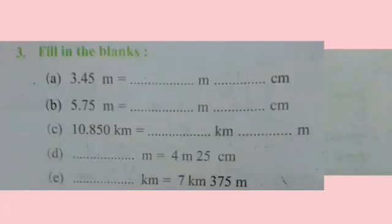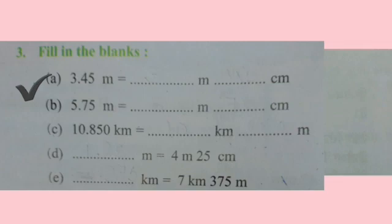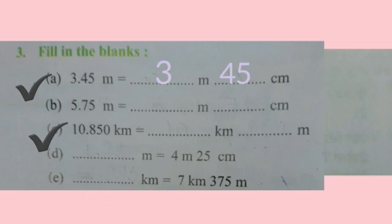Students, now we will solve part A of question number 3. We have to write 3.45 meters into meters and centimeters. As we have learned, meters are written on the left-hand side of the decimal and centimeters on the right-hand side. So here we will get 3 meters 45 centimeters. Now we will solve part C. We have to write 10.850 kilometers into kilometers and meters. Kilometers are on the left-hand side of the decimal and meters on the right-hand side. So here we will write 10 kilometers 850 meters.